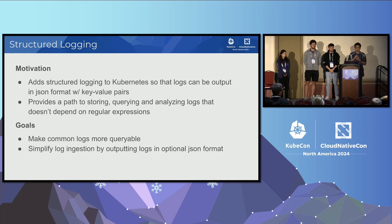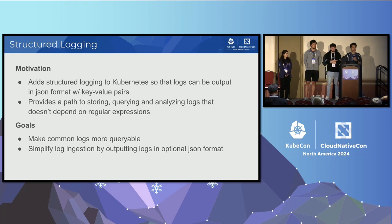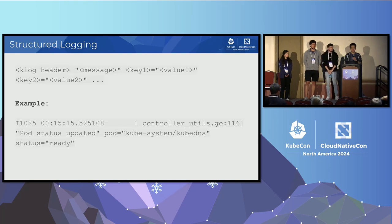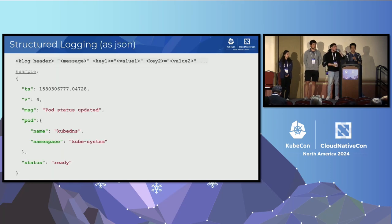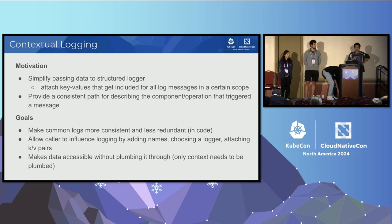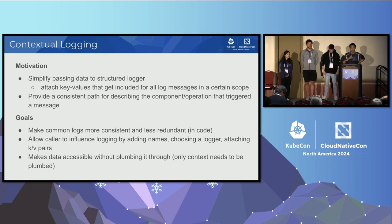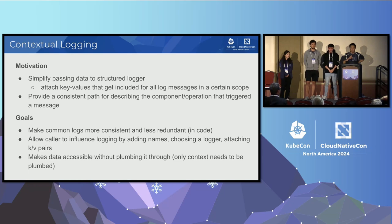Some of our log injection is simplified through an optional JSON format. When we embarked on this effort, we also started realizing that it was not sufficient just to output stuff in structured format. It turns out it's not super practical to pass pod information or node information everywhere in the Kubernetes code base. So we embarked on an effort called contextual logging, which allows you to derive key-value pairs from the context.